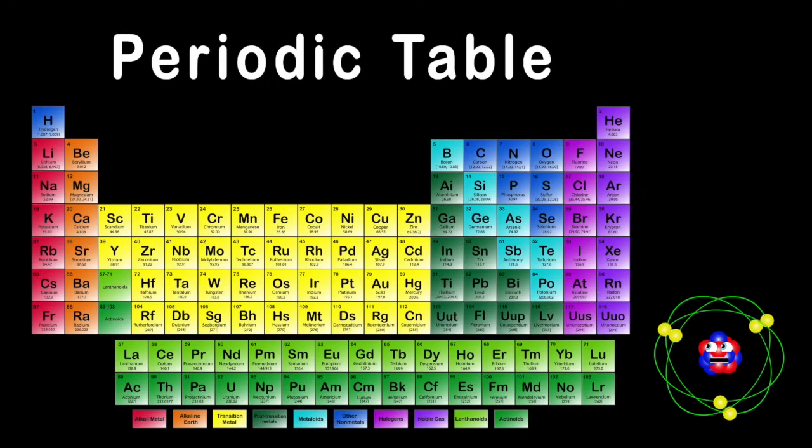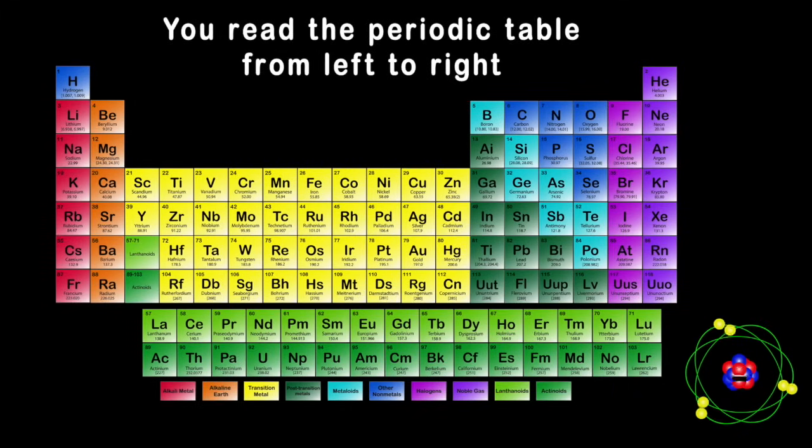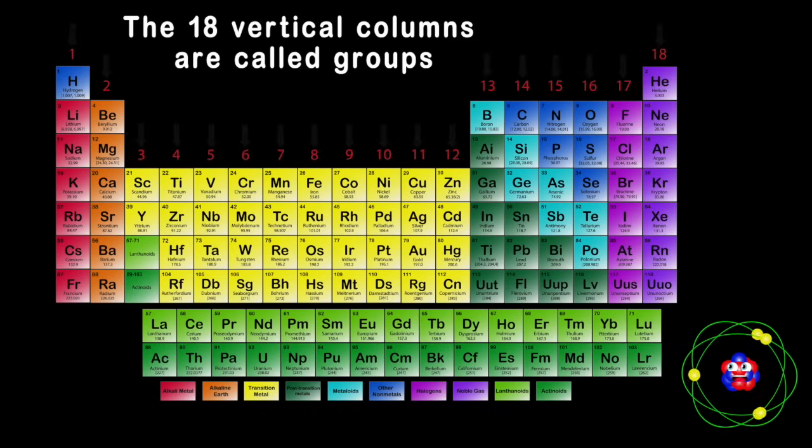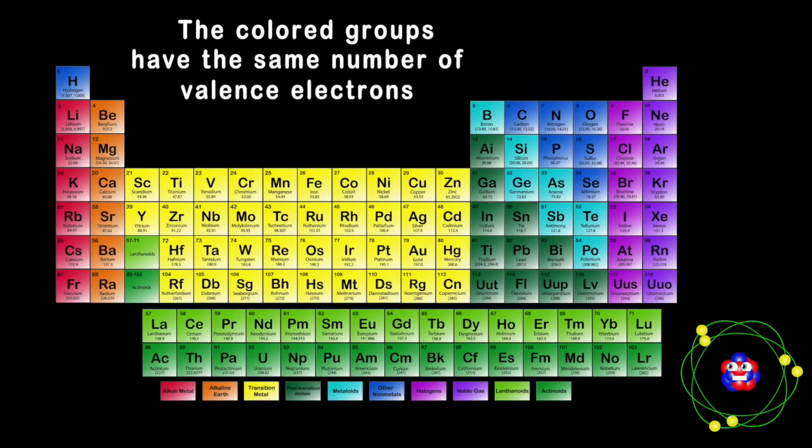Looking at the periodic table, what do you see? A host of elements that make up everything in the galaxy. You read the periodic table from left to right. Each of the seven horizontal rows are called periods in sight. The eighteen vertical columns are called groups on the table.